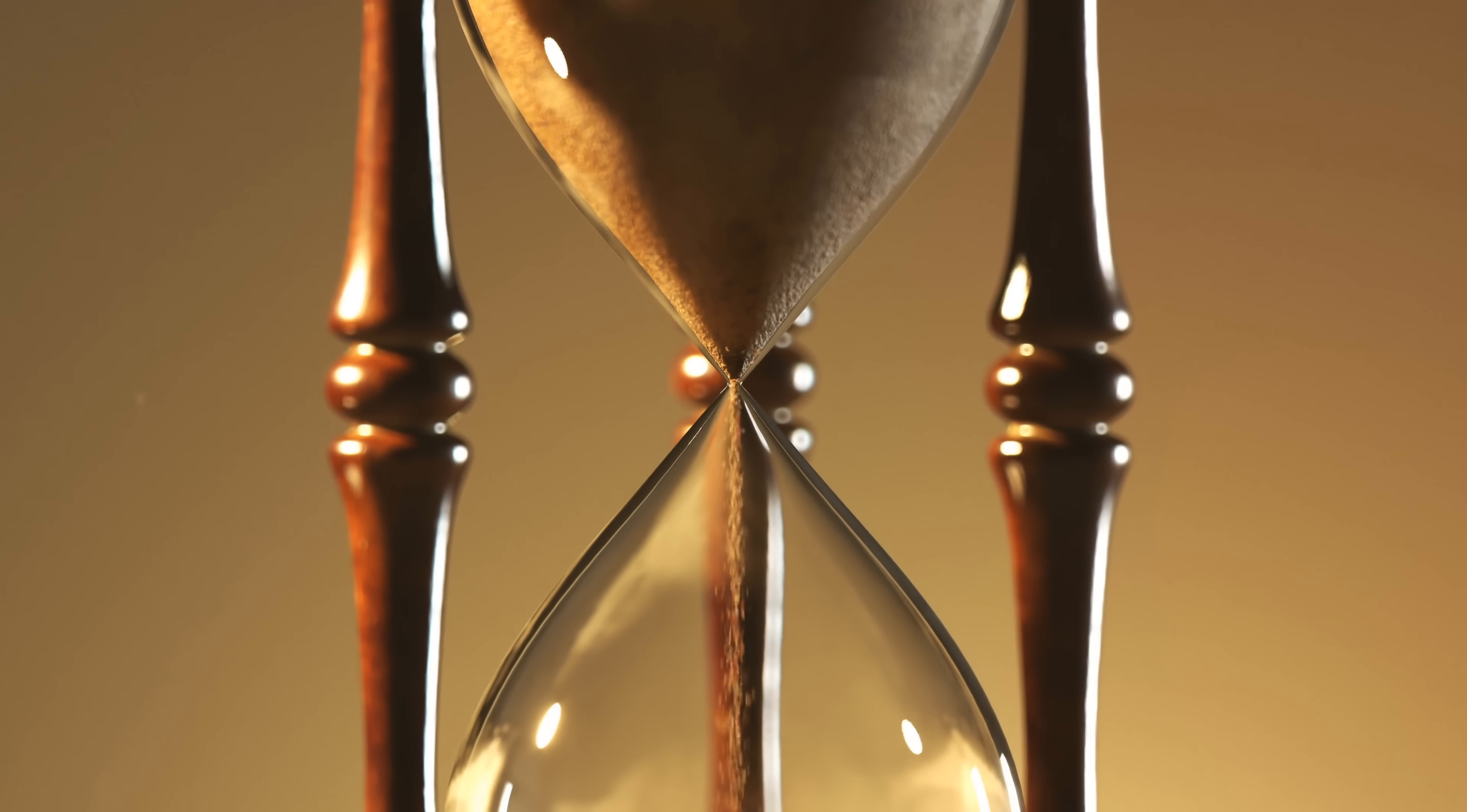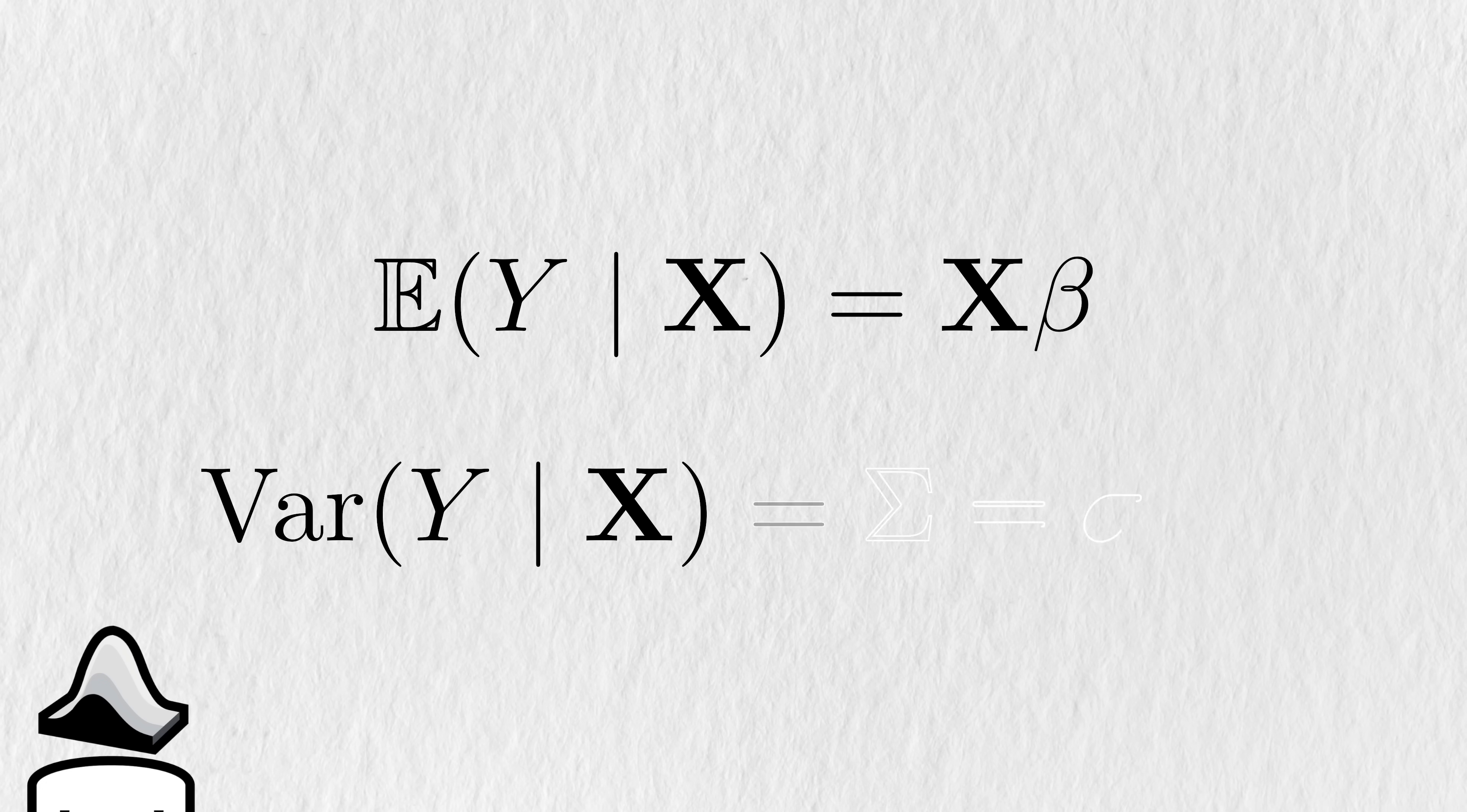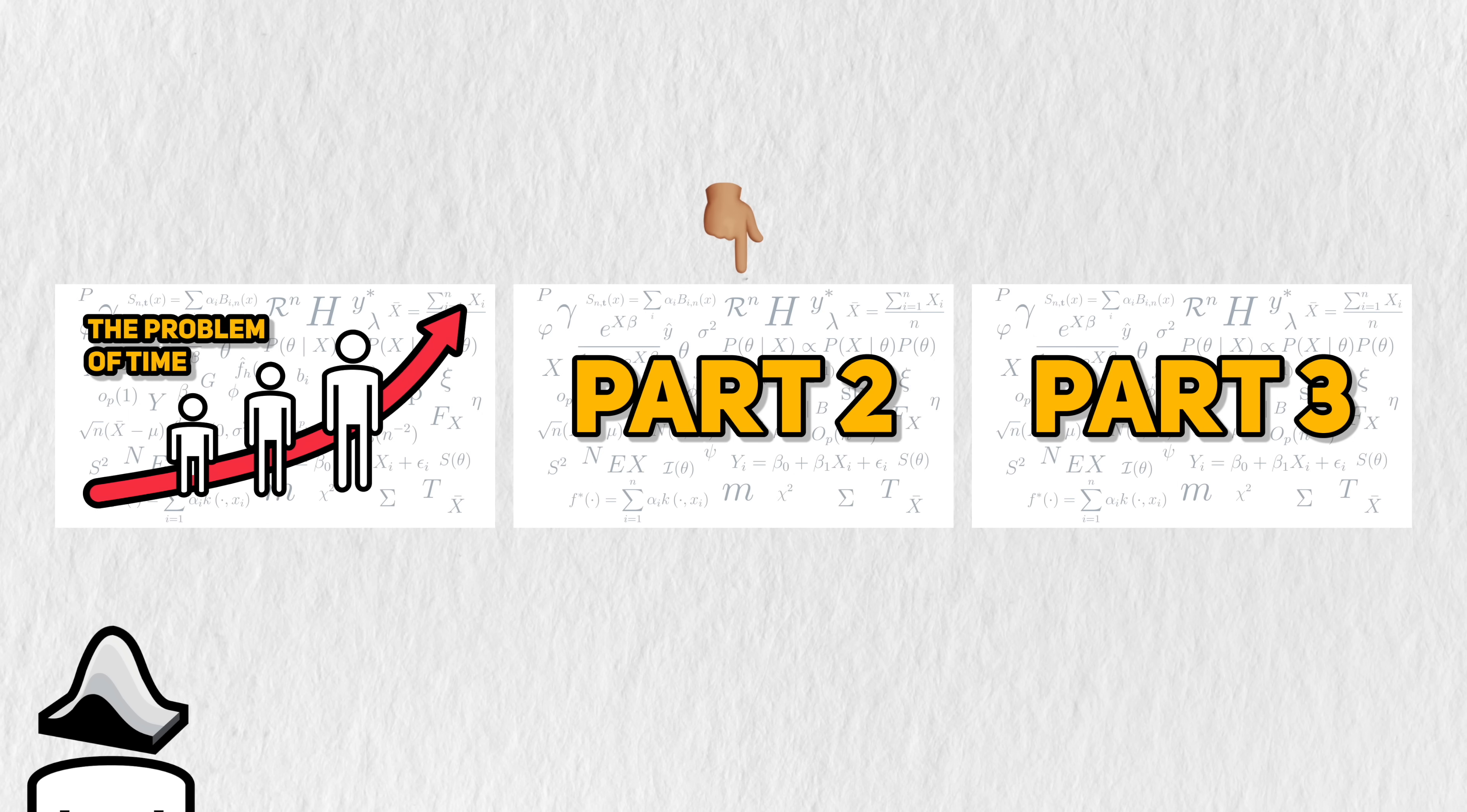Longitudinal data represents a concrete example of how common statistical assumptions can be broken in the real world. And it's our job as responsible statisticians to make sure that our models approximate the real world as best as they can. To wrap up this video, I'll leave you with one last problem. The GLS estimators give us a way to deal with continuous outcomes in a longitudinal context. What if we want to estimate binary or count outcomes over time? How would we do that? This will be the topic of the second video of this series.